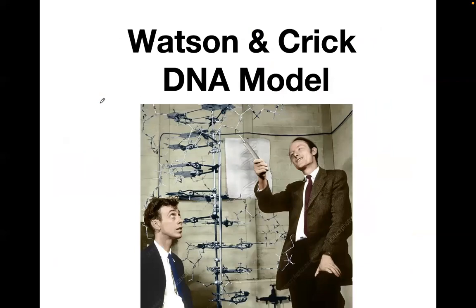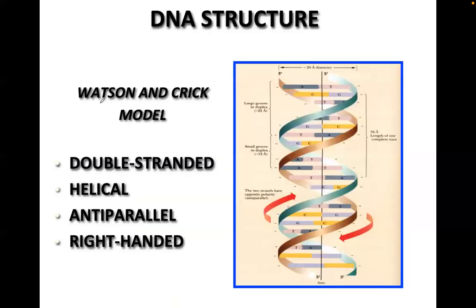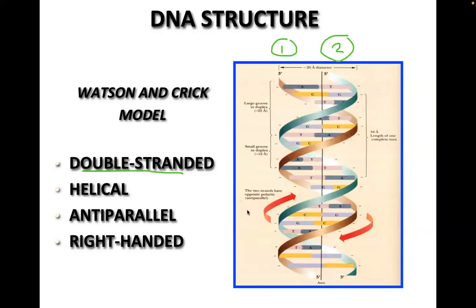The Watson and Crick model states that DNA is double-stranded, helical, anti-parallel, and right-handed. One complete turn of the Watson and Crick DNA model is 34 angstroms. The two strands run anti-parallel: one strand is 5 prime and the other is 3 prime.